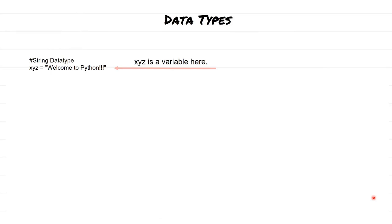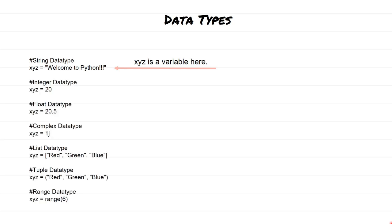Let me start with variables and how we actually define a data type. In Python, defining a variable is very easy. You just begin by typing the name of the variable — for example, xyz is the name of the variable. You can have integer data, float data, complex data, list data, tuple data, or range data. All of those can be defined using the same approach. You put the variable name on the left, then an equal sign, and on the right you assign the value.